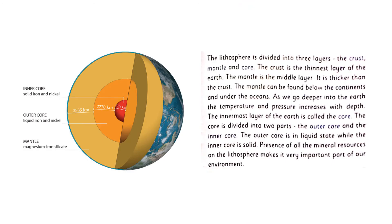The lithosphere is divided into three layers: the crust, mantle and core, which you can see in the picture also. The crust is the thinnest layer of the Earth — the first layer and a very thin layer. After the crust, we have the mantle. The mantle is the middle layer and is thicker than the crust. The mantle can be found below the continents, that means under the oceans.